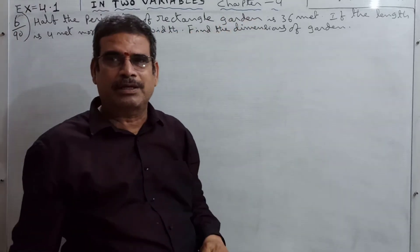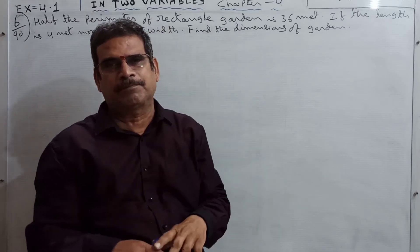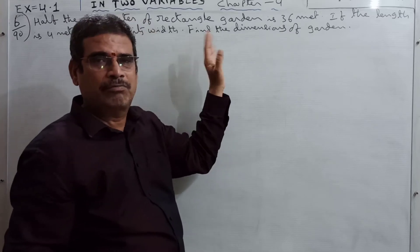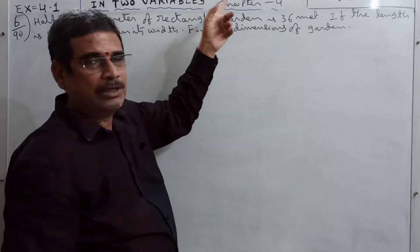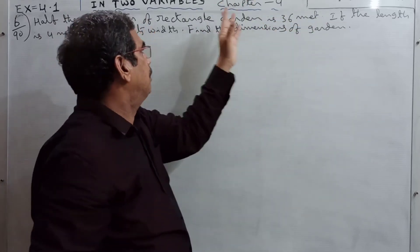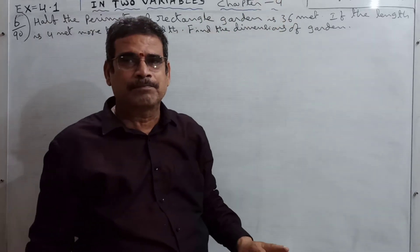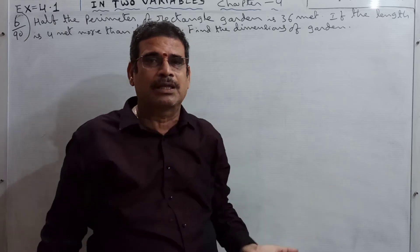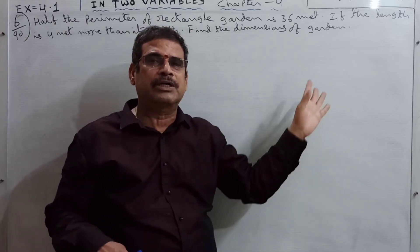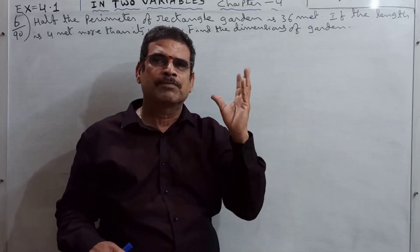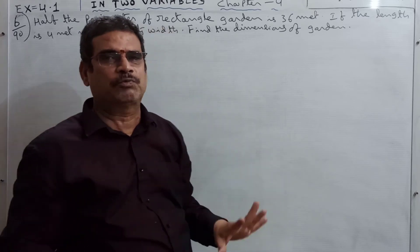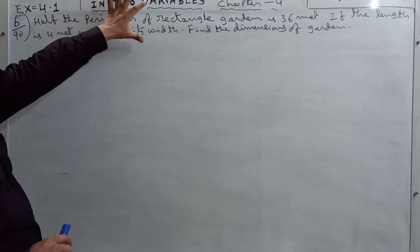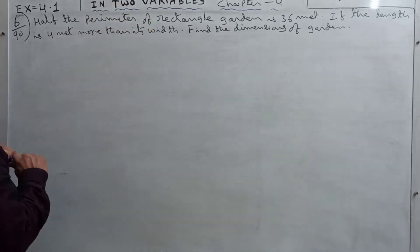Now we have a rectangular garden, a rectangle shape. What is the given data? Perimeter is half 36 meters. We have to find the measurements - what is the length, what is the breadth. You have to read the question carefully and try to understand it.